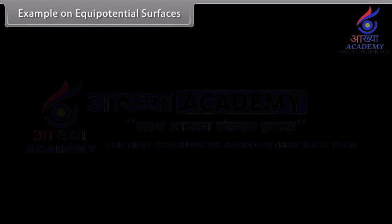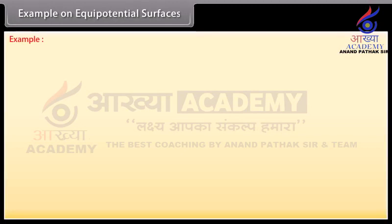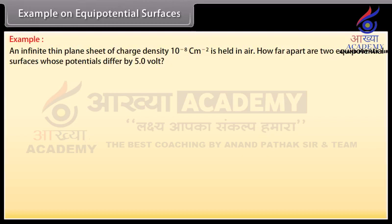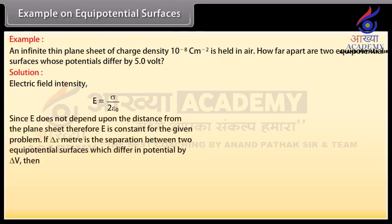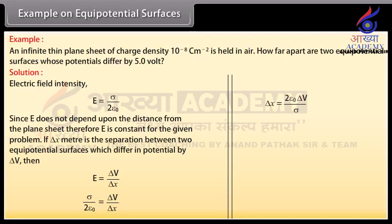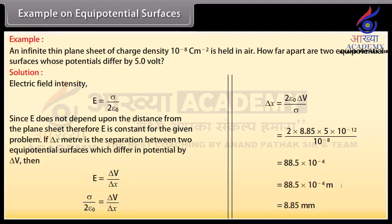Example on equipotential surfaces: An infinite thin plane sheet of charge density 10⁻⁸ C/m² is held in air. How far apart are two equipotential surfaces whose potentials differ by 5 V? The electric field intensity E equals σ upon 2ε₀. Since E does not depend on distance from the plane sheet, E is constant. If ΔX is the separation between two equipotential surfaces differing in potential by ΔV, then E equals ΔV upon ΔX. We evaluate ΔX as 2ε₀ΔV divided by σ. Putting in the values, ΔX equals 8.85 millimeters.